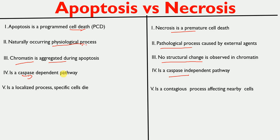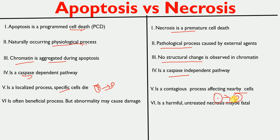Apoptosis is a localized process, meaning only specific cells die. For example, after 120 days, only red blood cells die; a nearby cell of a different type will not die until its own time arrives. Necrosis, however, is a contagious process affecting nearby cells — a necrotic cell may cause damage to adjacent cells, spreading the necrosis process.